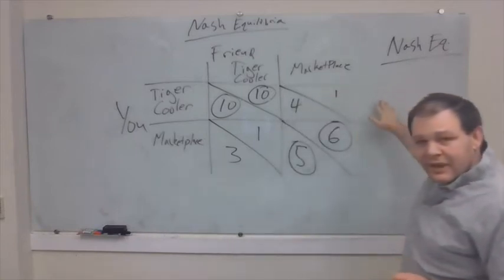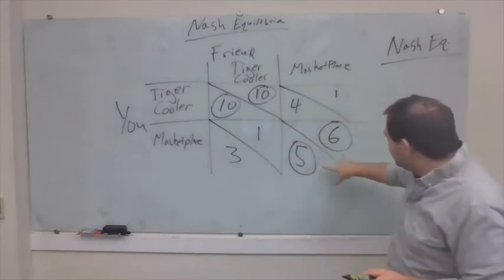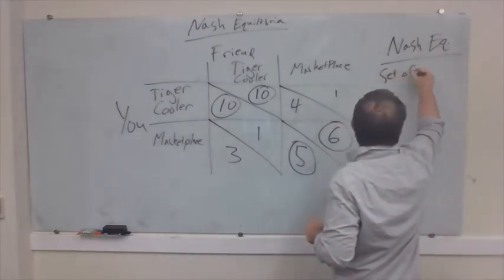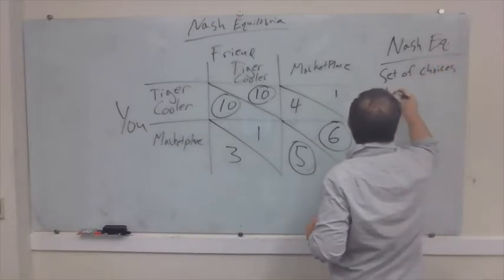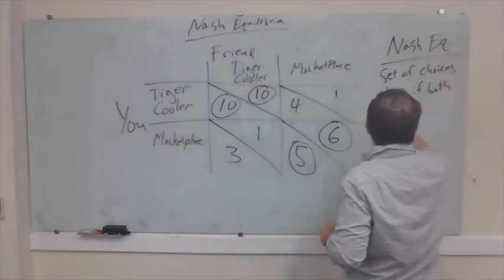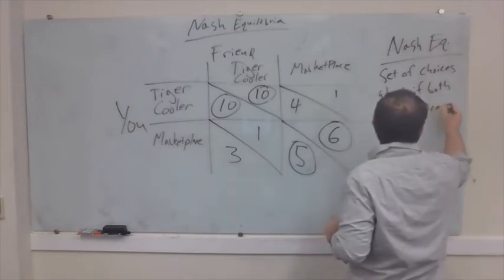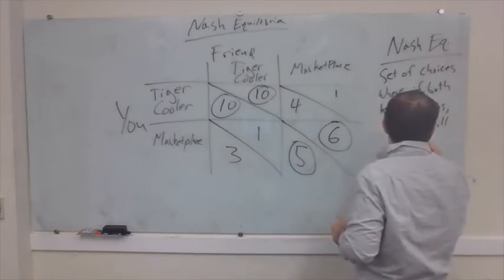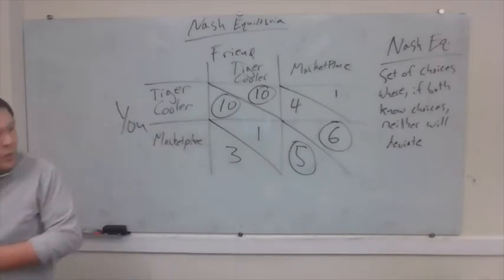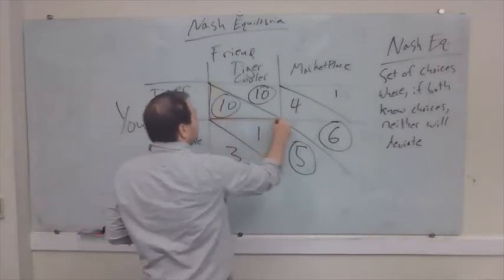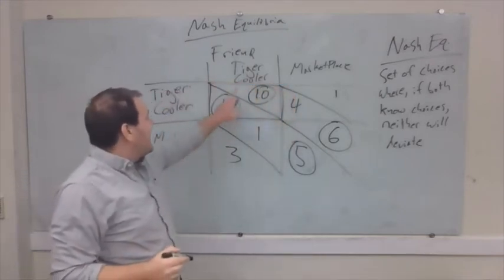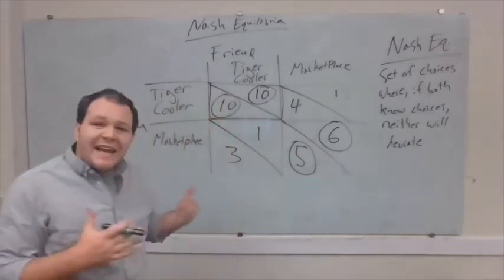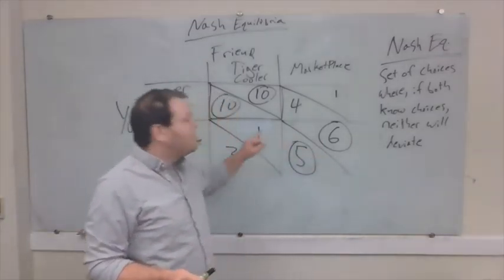A Nash Equilibrium is going to be some set of choices where, if both players know what the other player will do, neither has a reason to deviate from the plan. We know that both of you being at the Tiger Cooler is a Nash Equilibrium, because if I expect you to be there and you expect me to be there, neither of us are going to deviate. We don't know which of these two plans will happen, because once any plan is in place, neither one of us will unilaterally move away to the other plan.